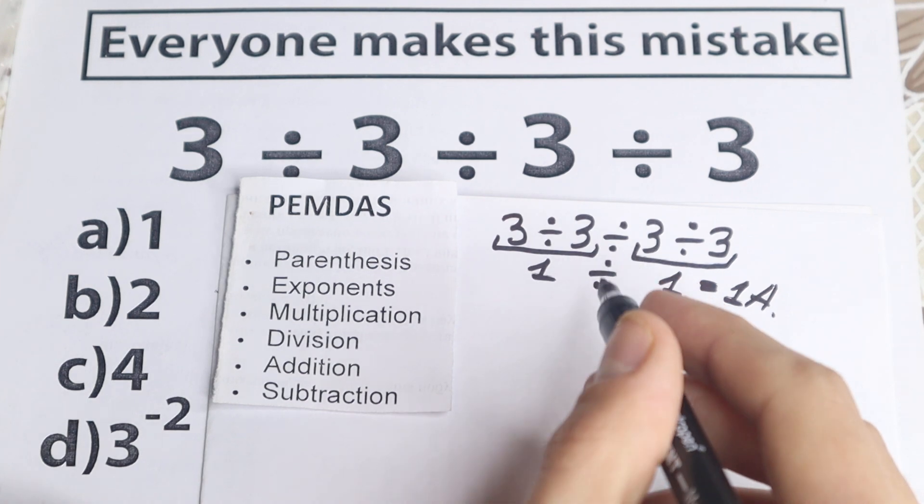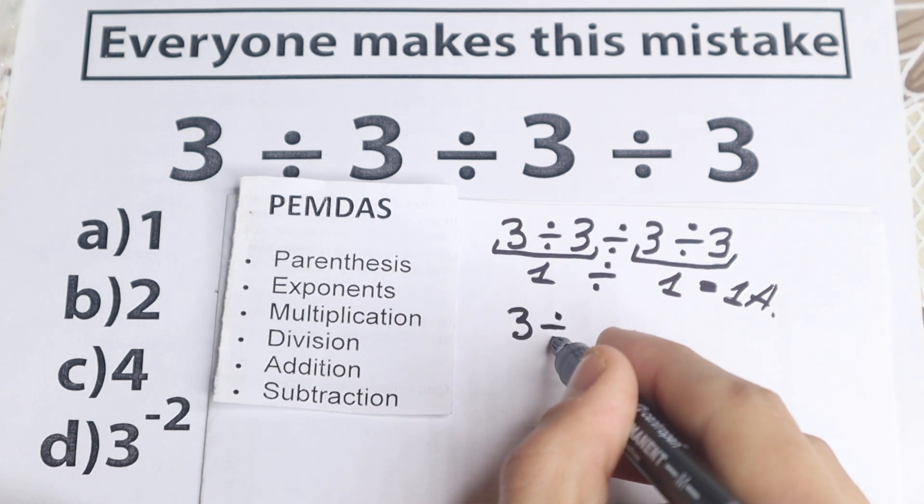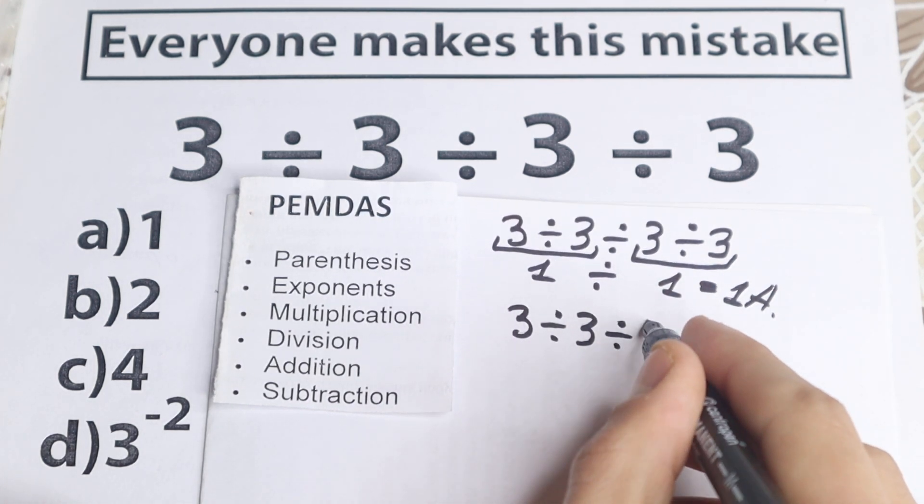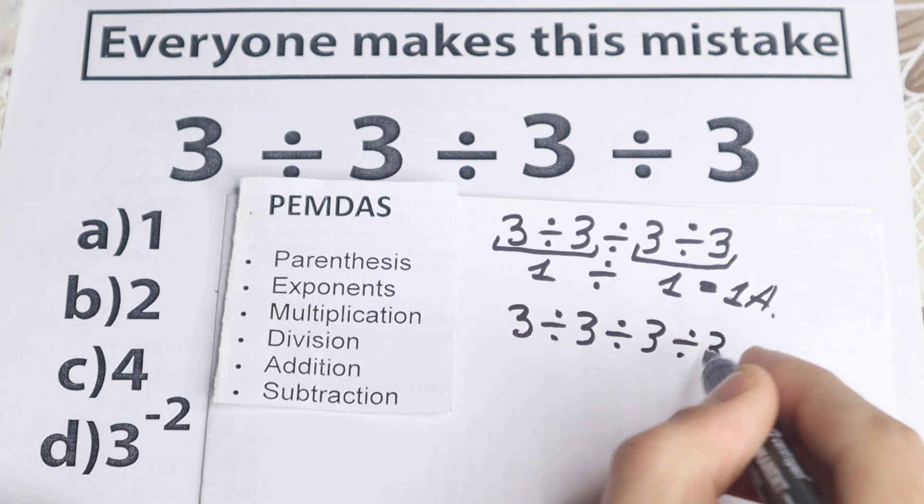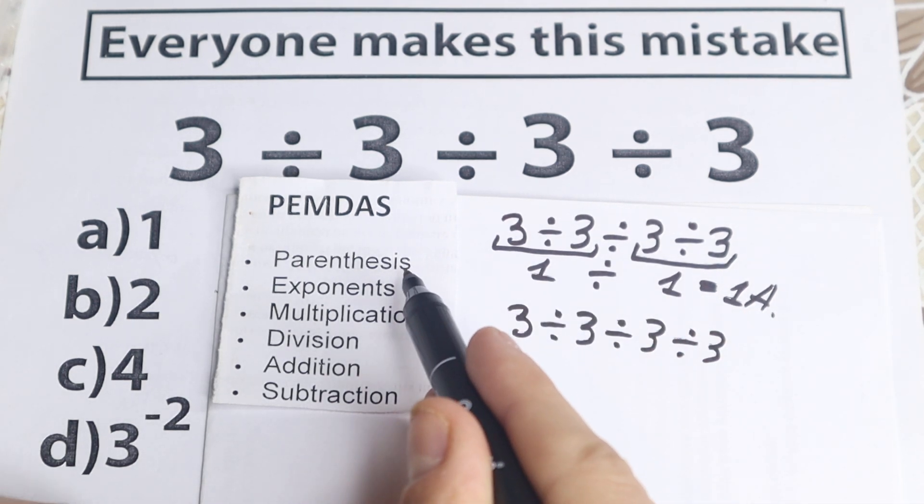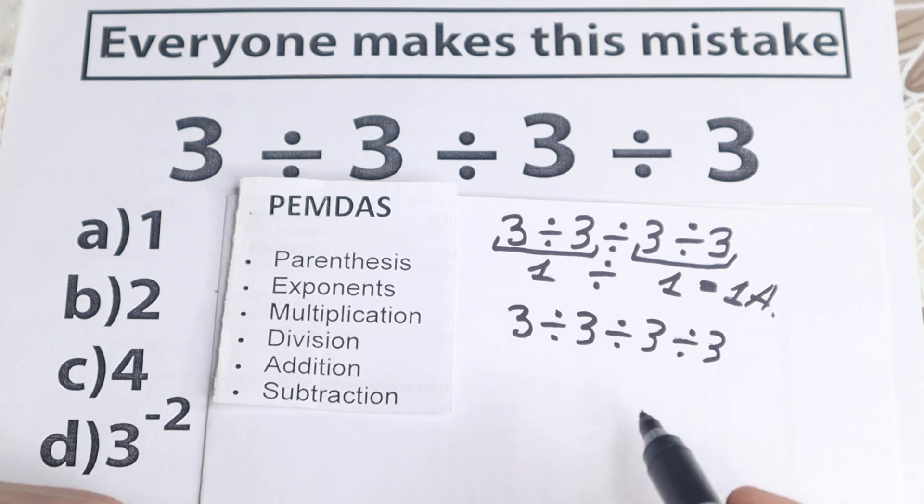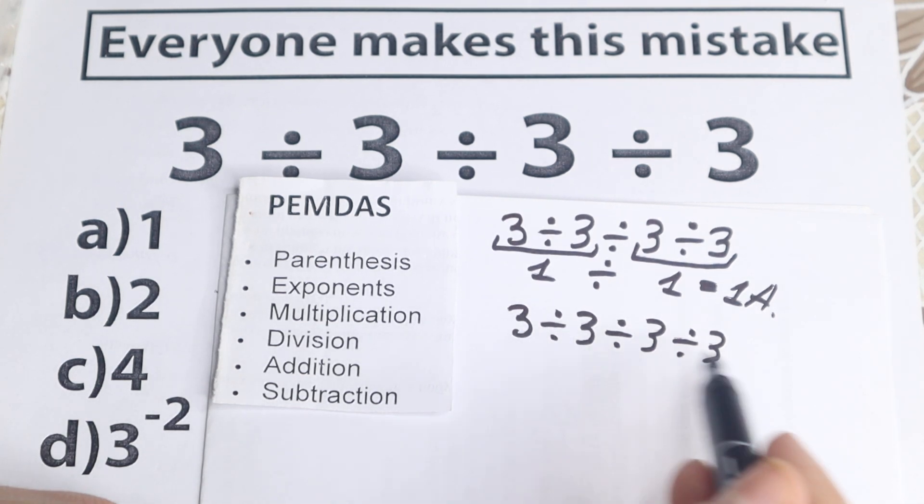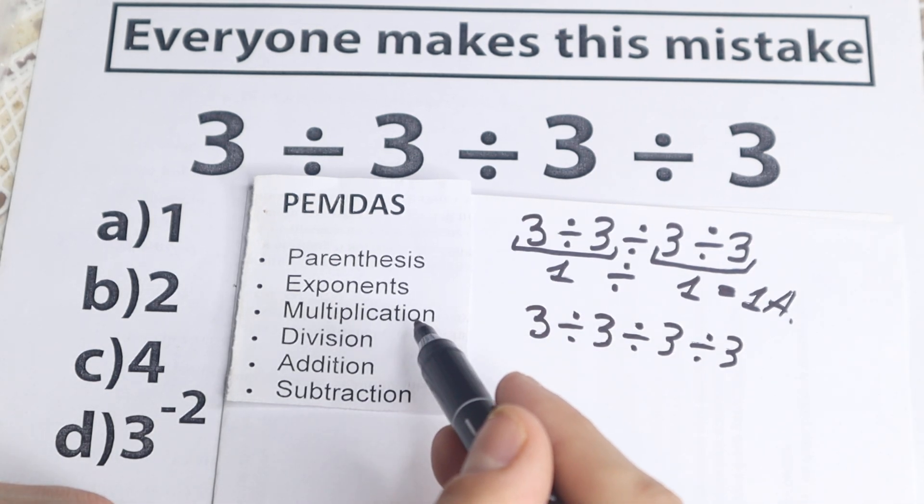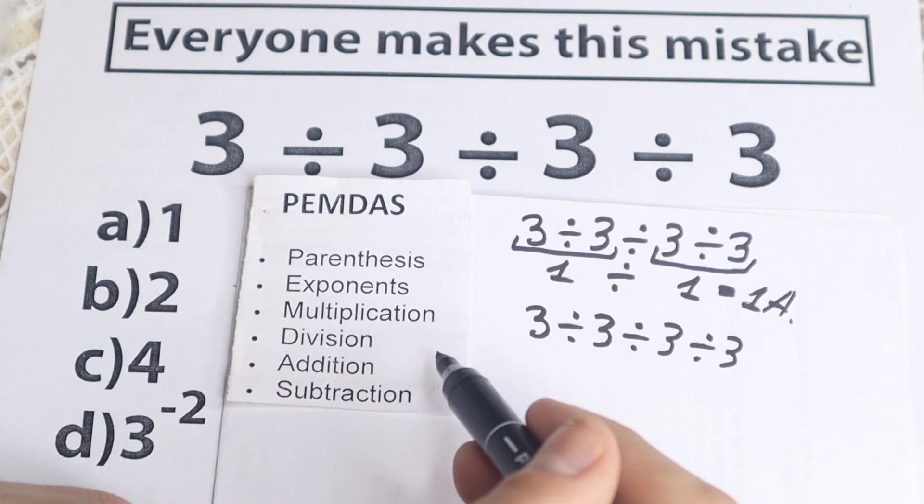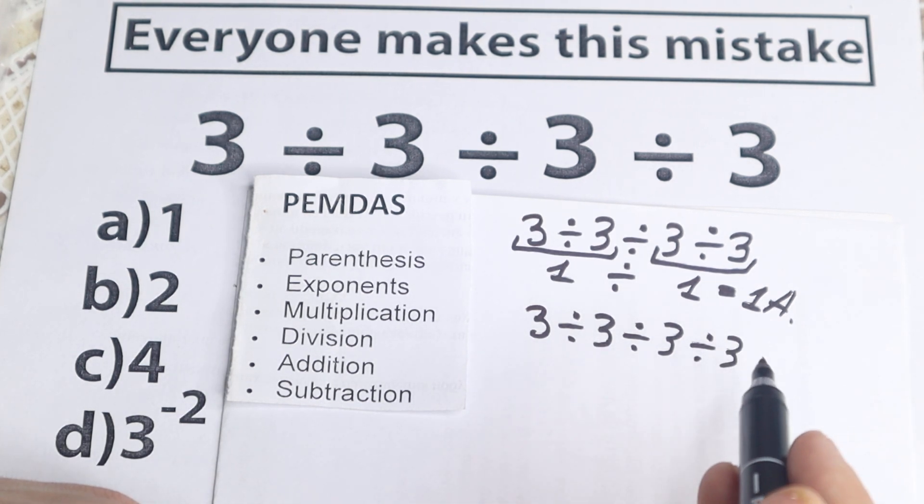So the first step according to PEMDAS, we have 3 divided by 3, I just rewrite this problem, 3 divided by 3 divided by 3. The first step is parentheses. Are there any parentheses? No, I don't see any of those. Exponents? I don't see any exponent. Multiplication? I don't see any multiplication sign. The next step, division. I see a lot of division signs right here. So this is really great.